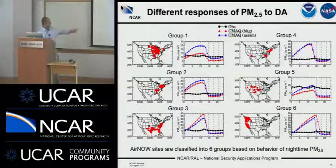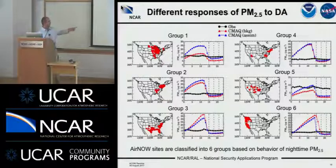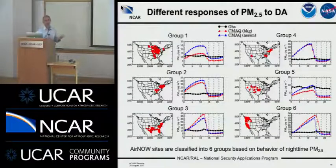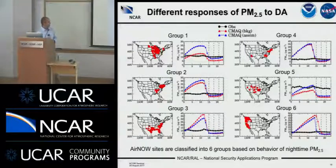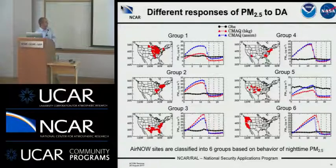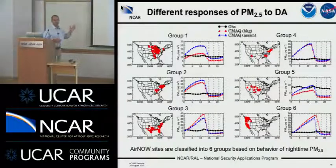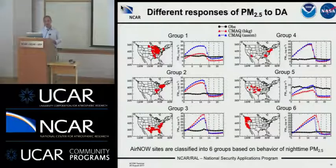There are other situations, such as group three, where the part between 0 and 15 UTC — nighttime to late afternoon — the data assimilation run is actually closer to the observations. So we're trying to understand what is going on. Even though we're improving the initial condition, for example in group one, things actually get much worse a few hours after the forecast.